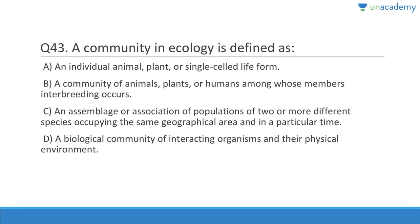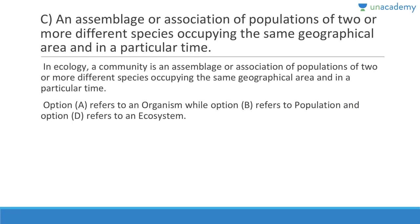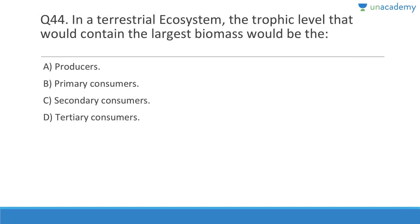Question 43: A community in ecology is defined as an assemblage or association of populations of two or more different species occupying the same geographical area at a particular time. In the hierarchy: individual → species → population → community. Option A refers to organism, B refers to population, and D refers to an ecosystem — you should know these terms properly.